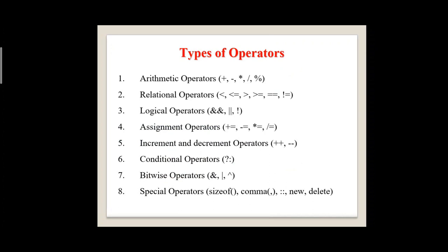The second one is relational operators: less than, less than or equal, greater than, greater than or equal, equal, not equal. These operators are used to compare the values of two operands or to find the relationship between two variables. The third one is logical operators: logical AND, logical OR, logical NOT. These operators are used to combine two or more conditions. The logical operator result is a Boolean value, either true or false.